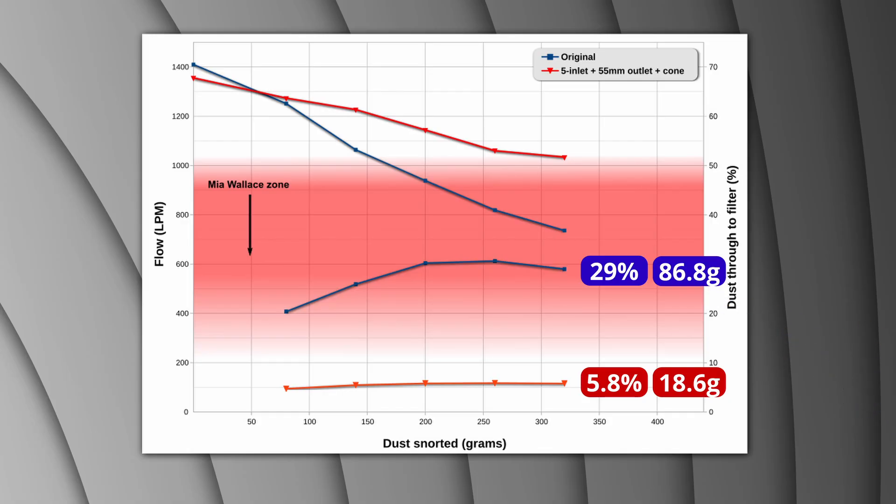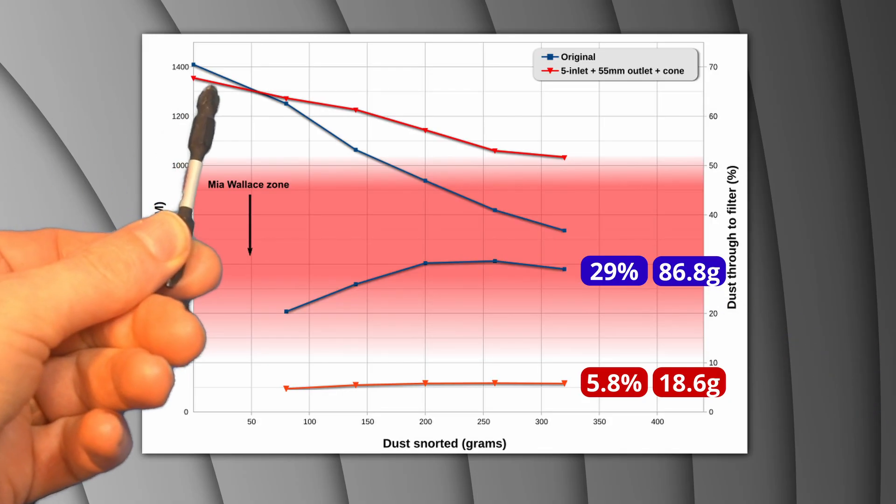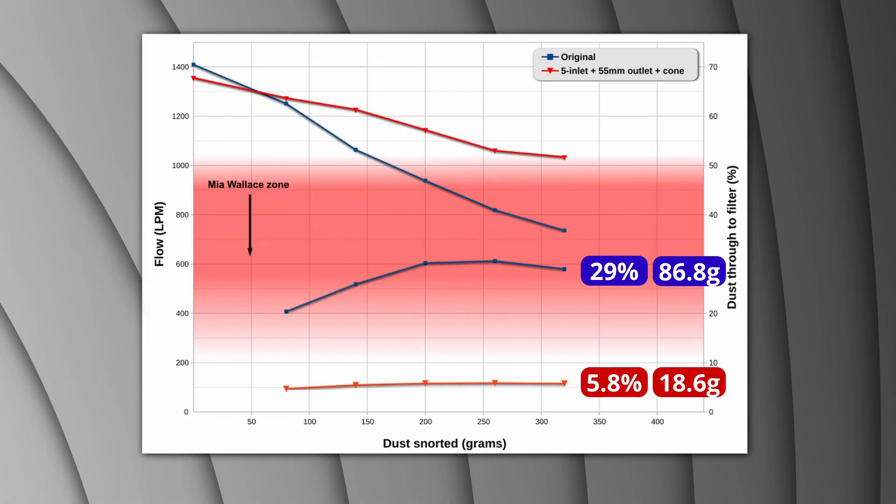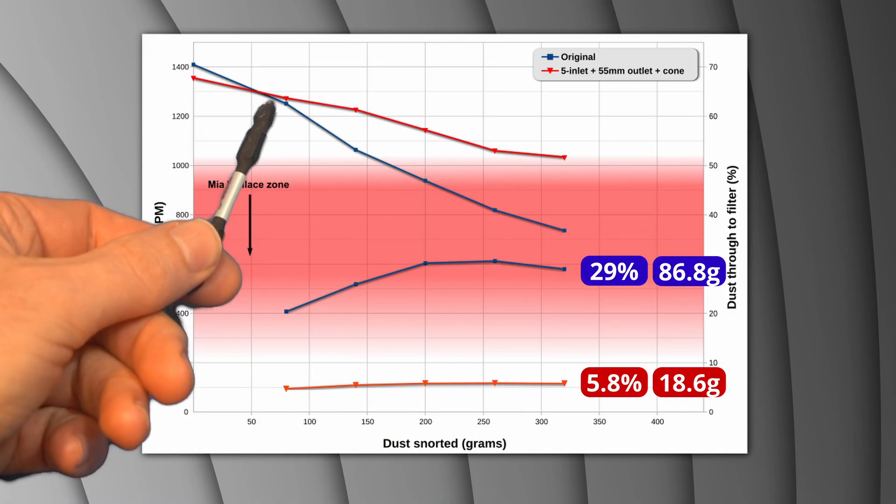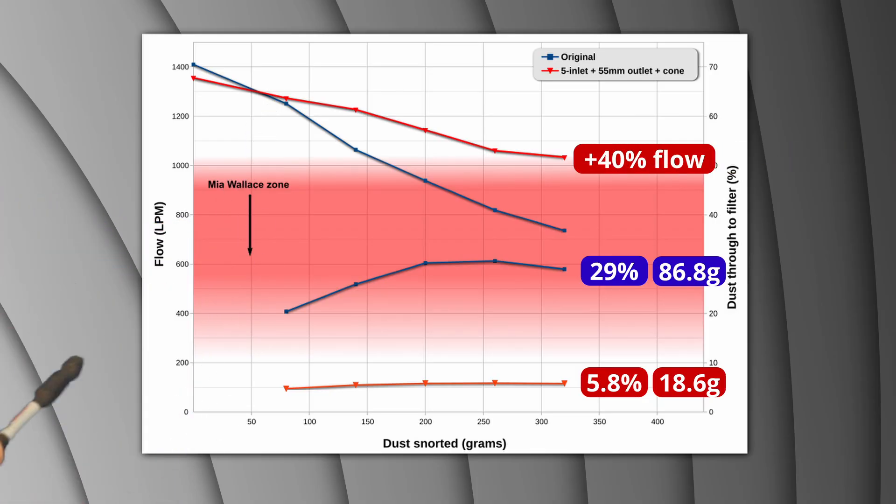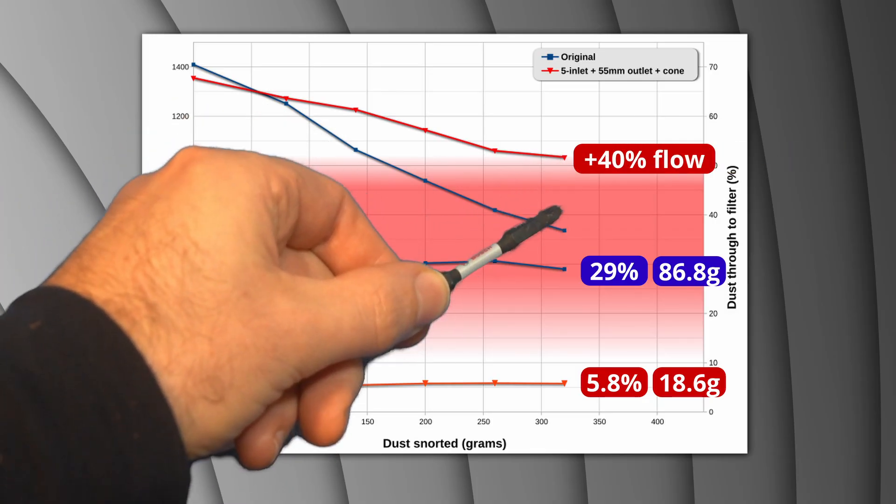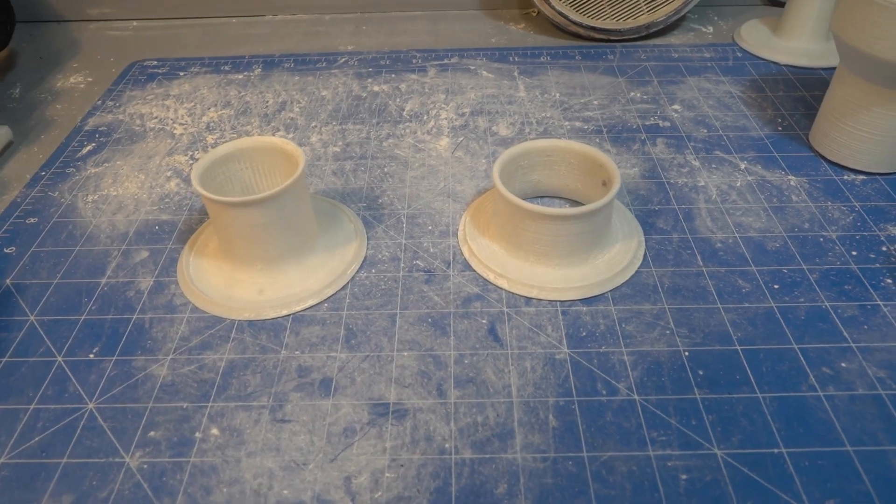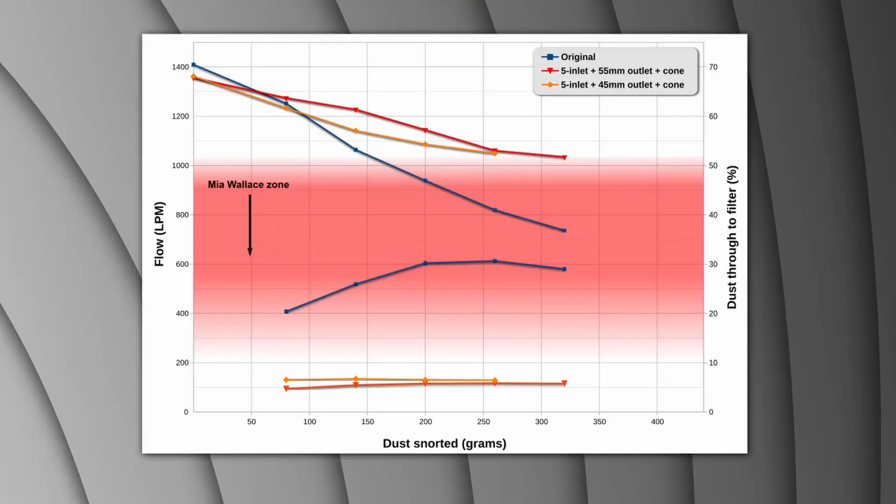Finally, we see the flow rate of the modded vacuum holds up much better with the modded vac surpassing the original after just 80g of dust. After 320g, the modded vac has 40% better flow than the original. I also tried it with a 45mm vortex finder, but there was little difference in flow or filtration.